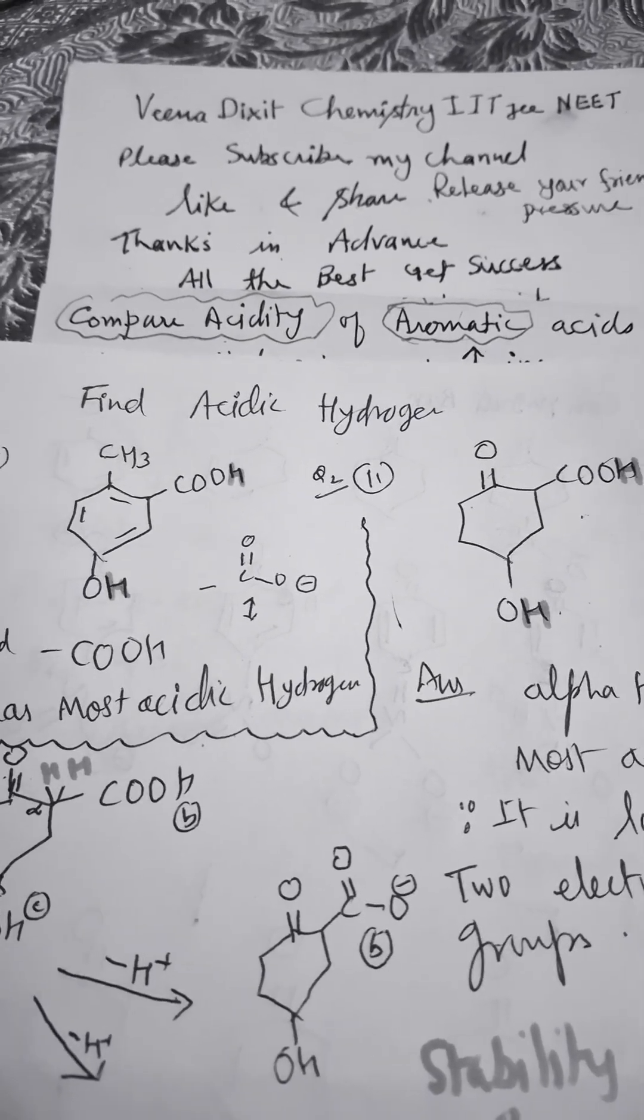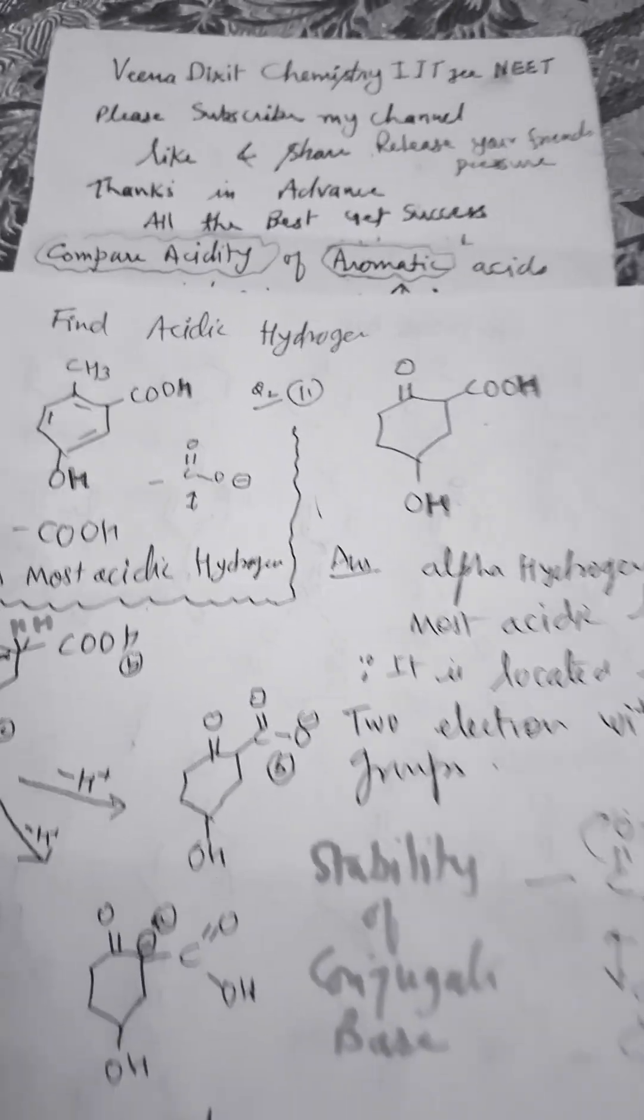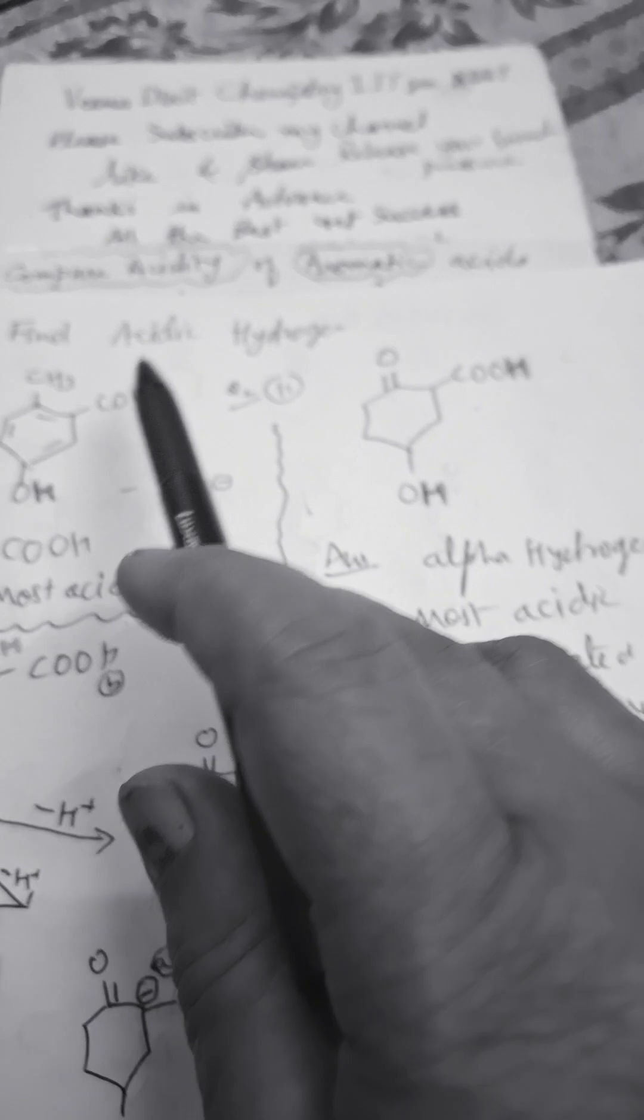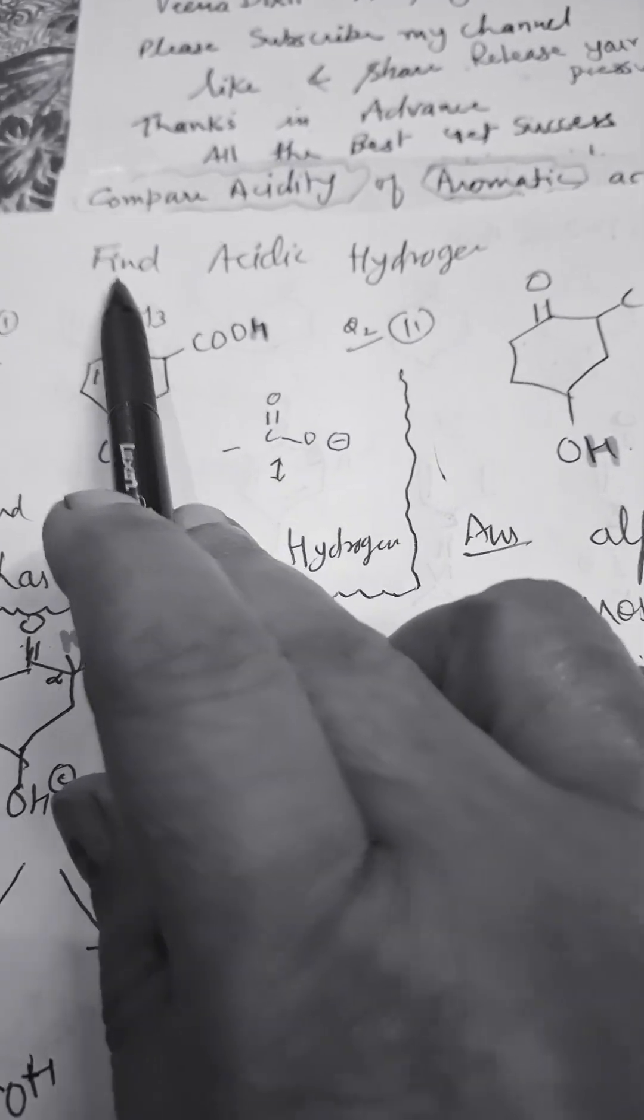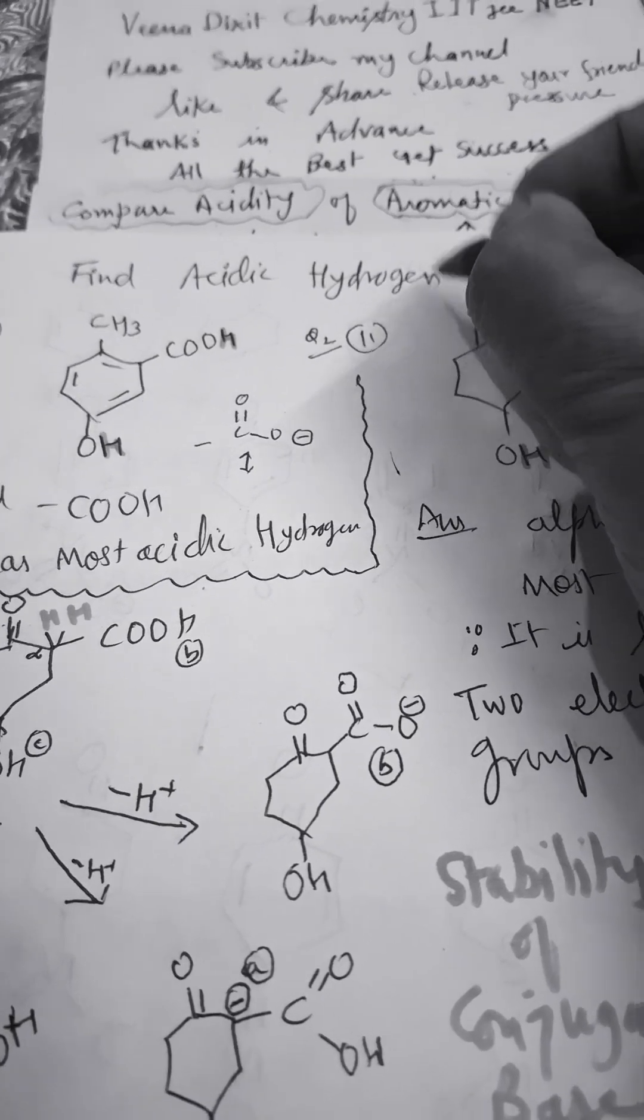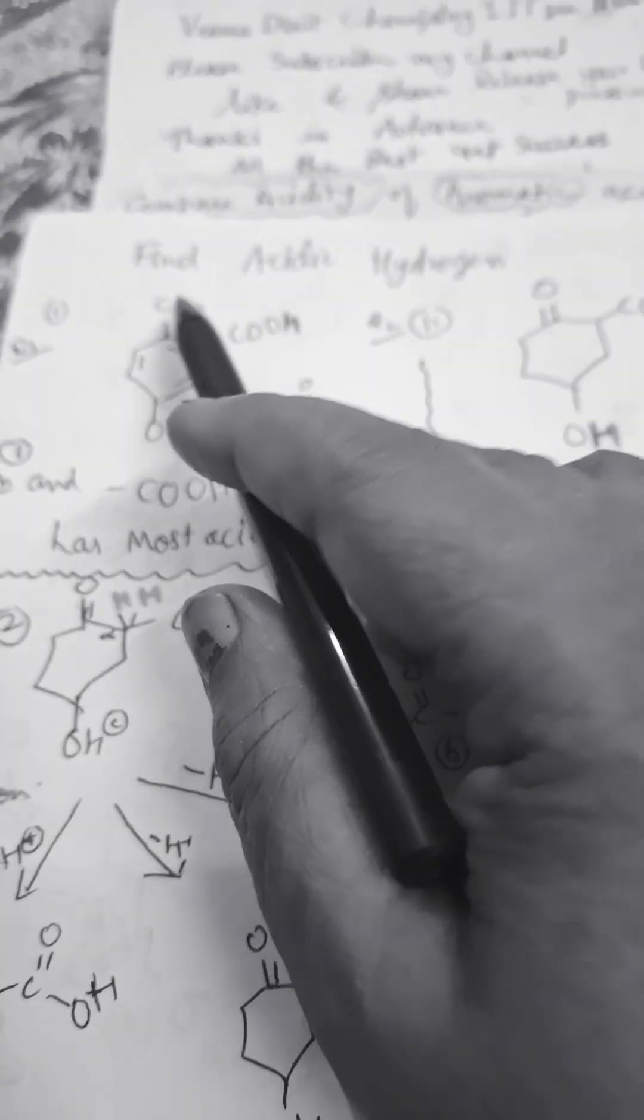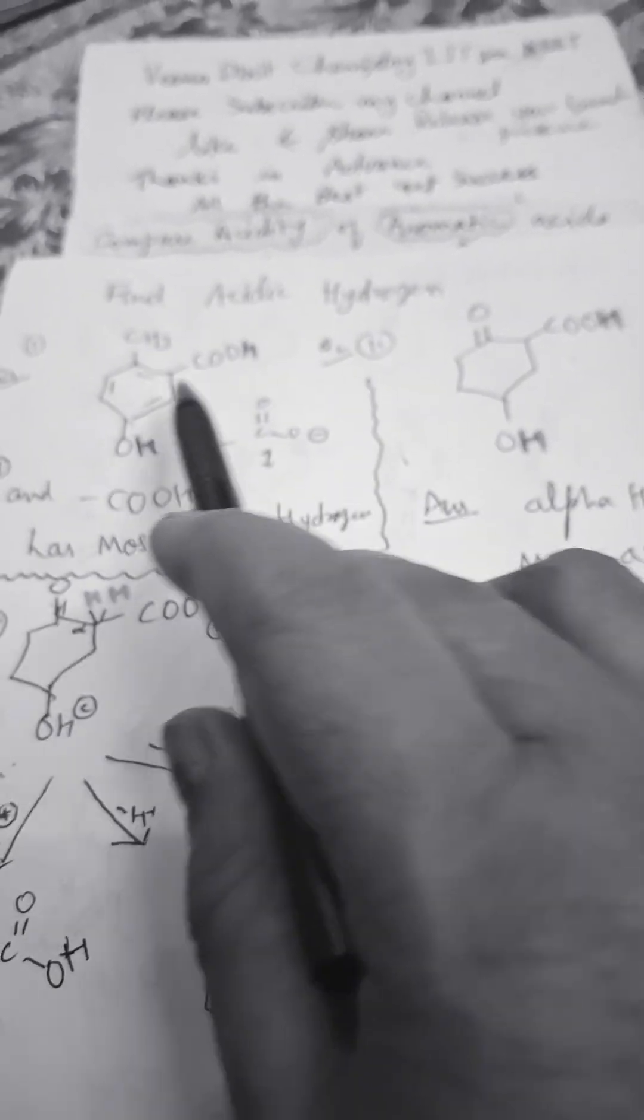Students, if you like my video please subscribe to my channel. God bless you. Compare acidity of given compounds. The question is: find the acidic hydrogen in the given compounds. Here we have CH3 group, COOH group, and OH group. Both of them are carboxylic group as well as OH group.